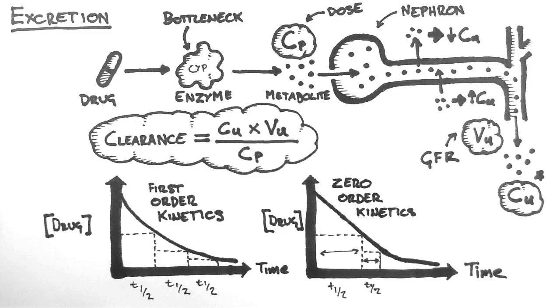Ethanol is an example of a drug with zero-order kinetics, which is why no matter how much someone drinks, they will only metabolize about 10 grams of alcohol per hour.